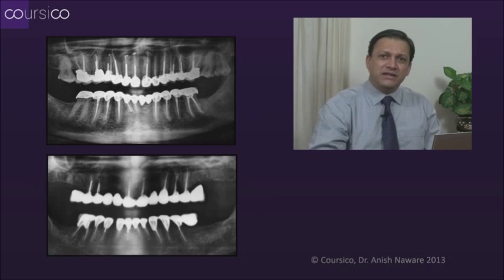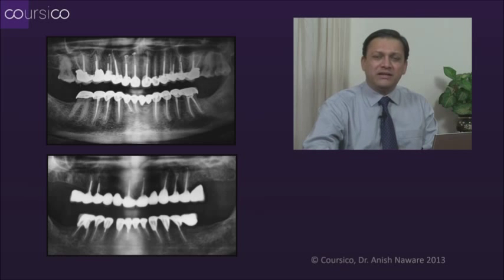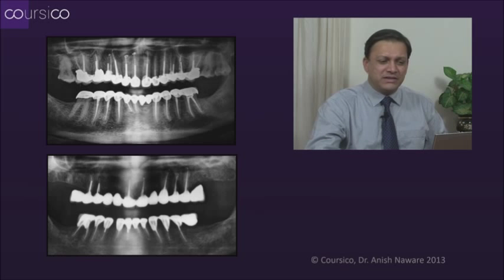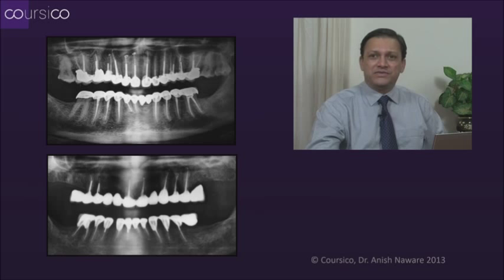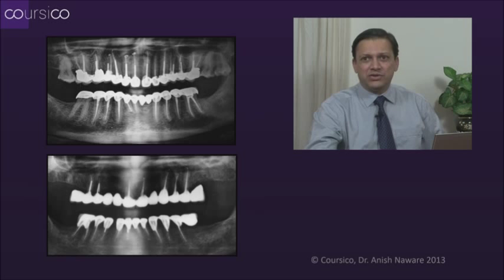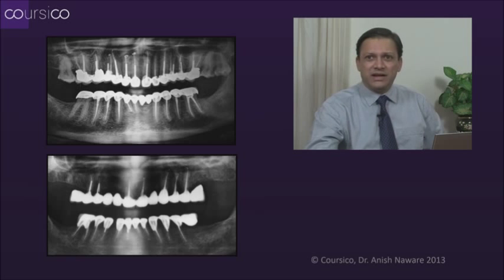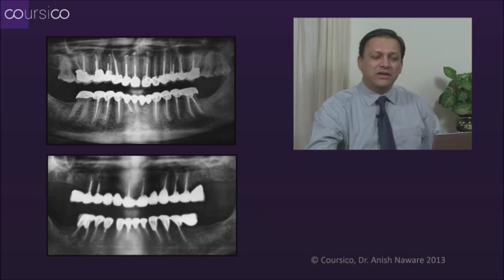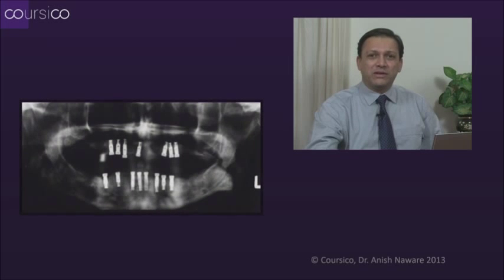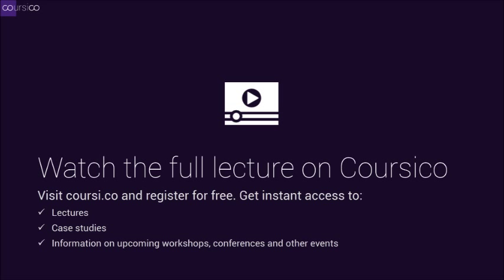Dental surgeons are again confused regarding treatment planning in their day-to-day practice, and they sometimes get carried away with some of the philosophies floated in dental practice. As a family dentist, the choice is yours — whether to perform full mouth root canals and place crowns on top by maintaining a vertical relation, or to wait and go for full mouth implants by extracting all teeth.